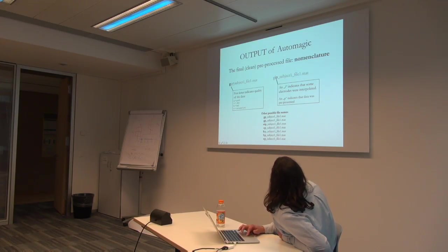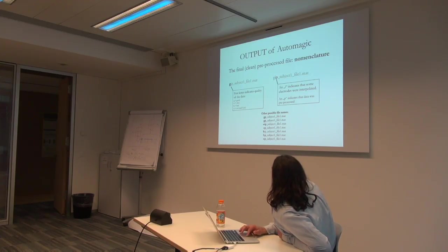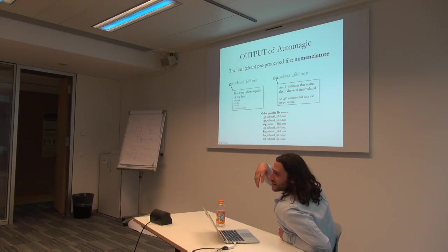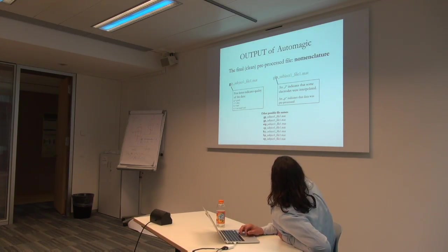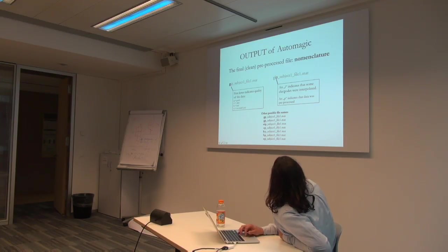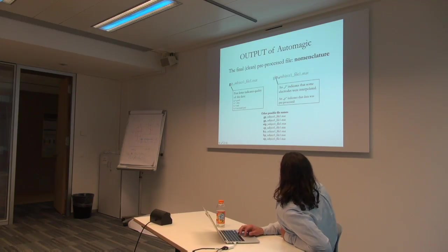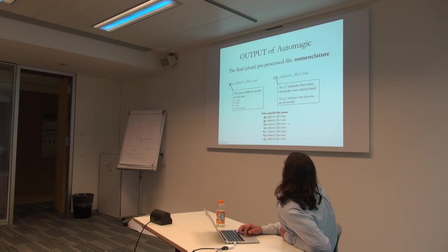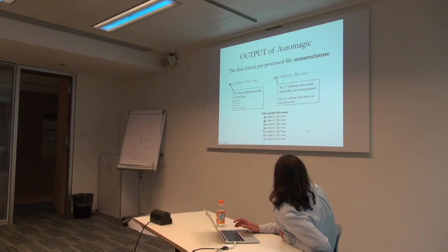The output file names follow a specific nomenclature. The first letter indicates quality: G for good, O for okay, B for bad, N for not rated. Other letters follow SPM conventions: I or E indicates electrodes were interpolated, and P indicates the data was pre-processed. So a fully processed, good-quality file with interpolation would be named 'GIP_subjectname'. All possible filename combinations are documented. Loading the output .mat file reveals an EEG variable (standard EEGLAB structure), auto_bad_channels, and whether interpolation was performed.